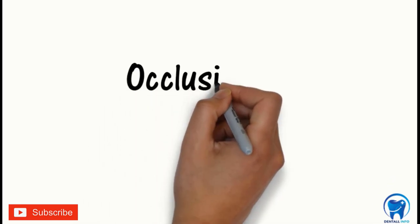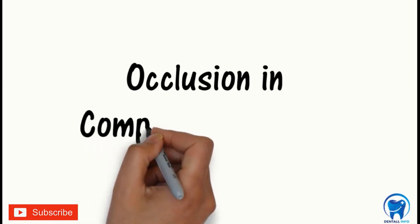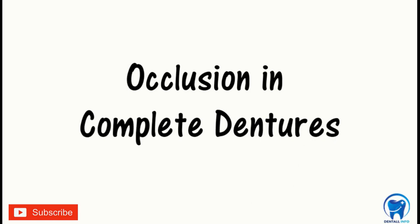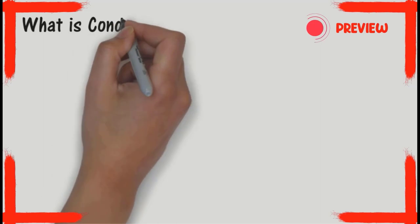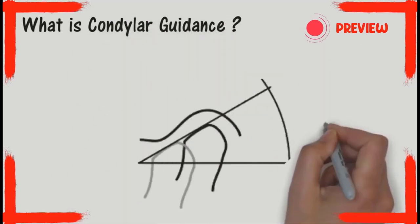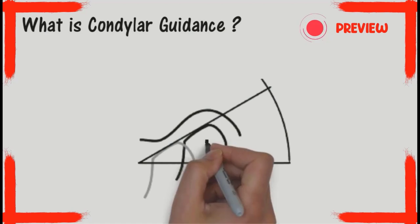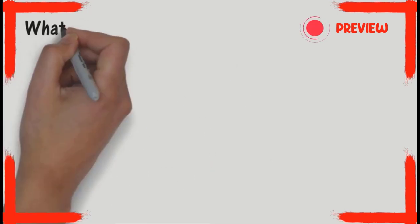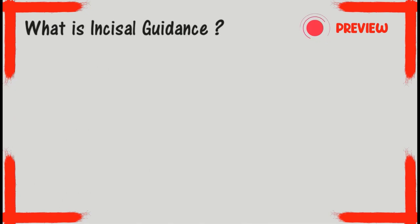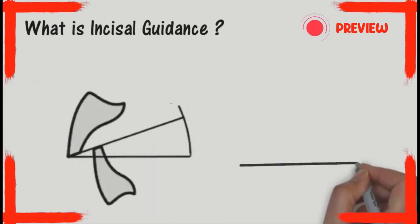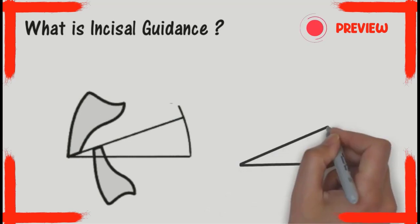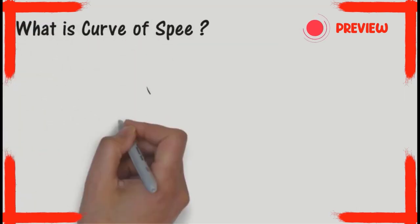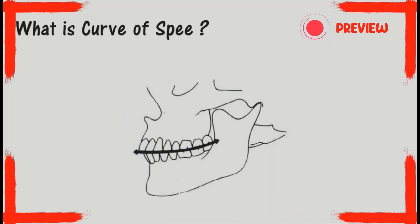Hello friends, today we will be learning about a very important topic which is occlusion in complete dentures. The important topics being covered in this video are condylar guidance, where we will learn how it is measured and its importance in balanced occlusion. Incisal guidance, which forms an integral part of occlusion, its measurement and significance has been discussed in detail while explaining the Hanau's Quint. The curve of Spee and the other compensatory curves and their contribution to the development of balanced occlusion.